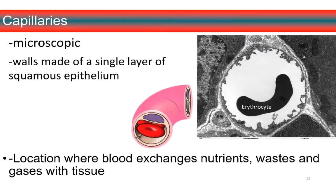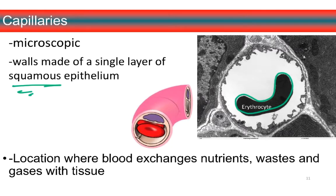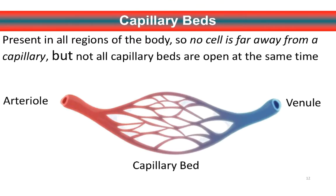Next we come to the capillaries. Capillaries are microscopic — remember the lung tissue that we looked at in lab last week. The cells are made of a single layer of squamous epithelium, so that's simple squamous epithelium. Remember squamous — you want to associate that with squashed. We have an image of a single erythrocyte going through a capillary, so you can see exactly how small these are. These are the only vessels thin enough to allow for the exchange of nutrients, waste, and gases with tissues. Our capillary beds are present in all regions of the body, meaning no cells are very far away from the capillary and the nutrients, oxygen, and waste removal it allows.